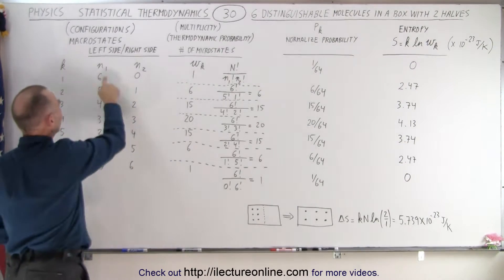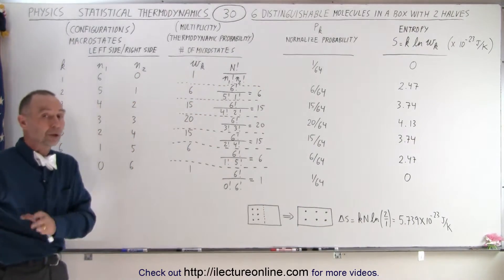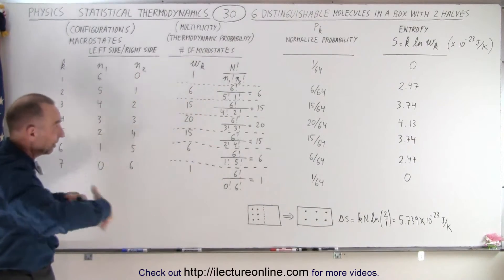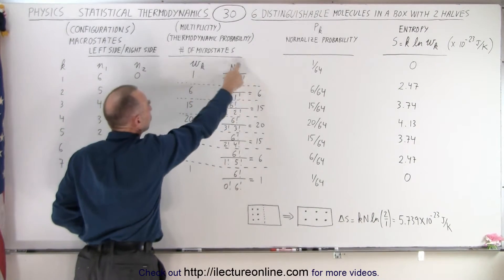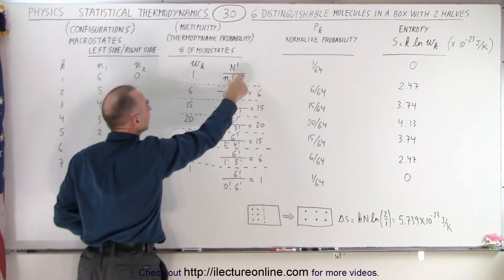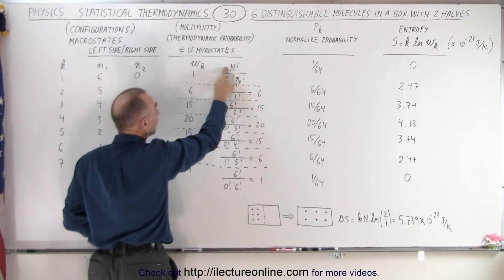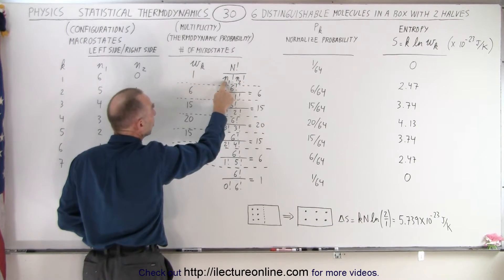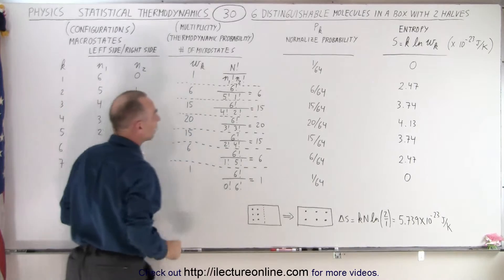So in the case of 6 and 0 there's only one possible way we can do that. All the molecules on one side and none on the other side. So therefore there's only one microstate. And this is the general equation how we calculate the microstates, the number of microstates. Large N being the number of molecules, N being 6, divided by the number of molecules in the one side and the number of molecules on the other side.